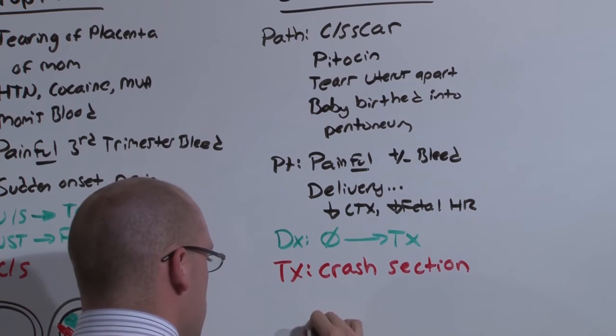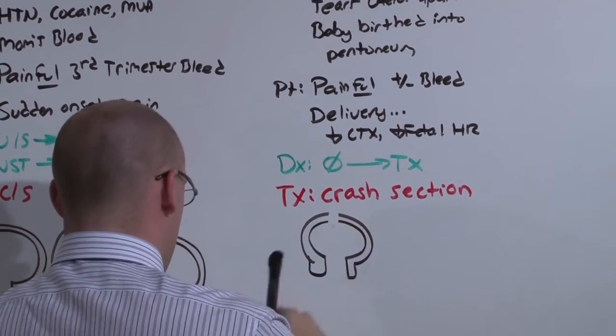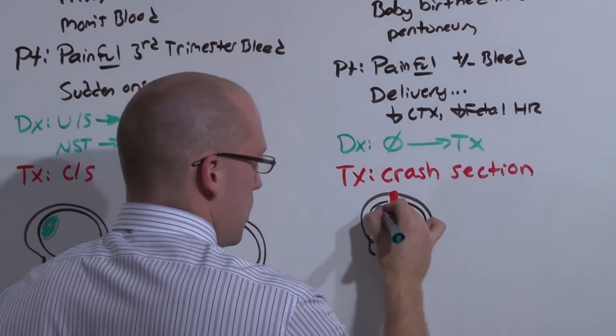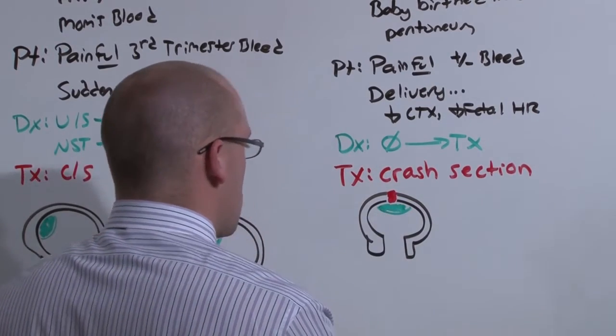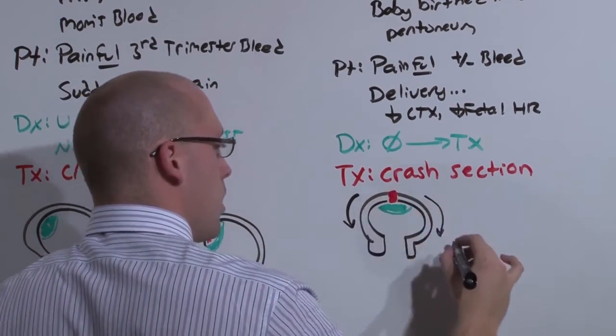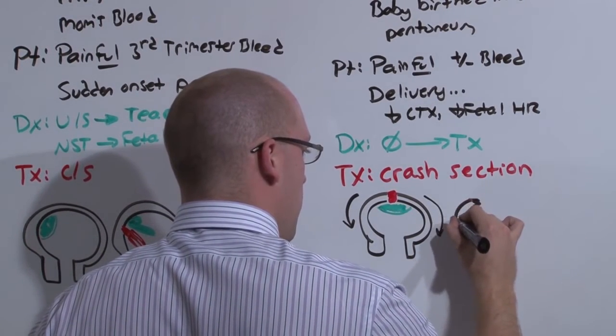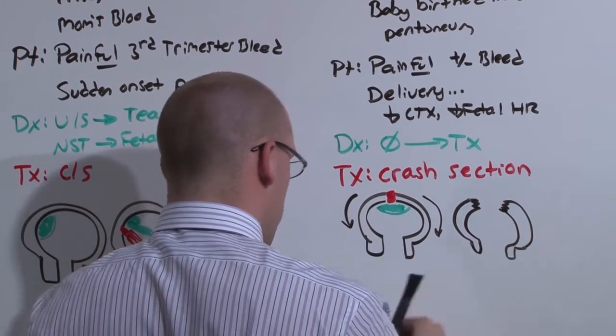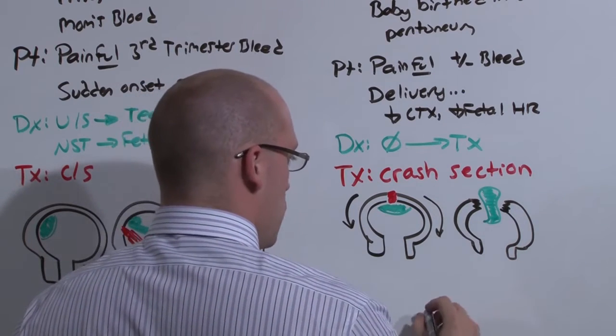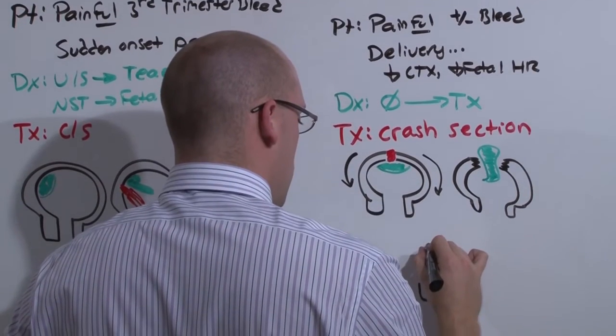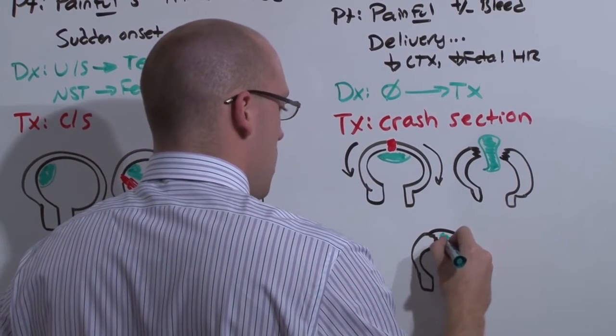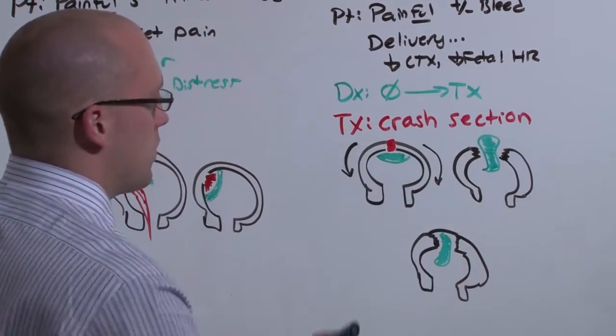So what this looks like is here's a uterus with an old C-section scar. And this is why vaginal delivery after C-section is so dangerous and why OBs fear it so much. The placenta was normally implanted in the normal spot. The contractions of the uterus are meant to propel baby forward. Instead, these contractions tense up on the scar and tear it apart. And baby is birthed through the tear in the uterus into the peritoneum. Alternatively, there is a partial uterine rupture where a single membrane contains baby in the uterus. Both of these require crash section. And they require crash section because baby will be doing very poorly all of a sudden and quickly get worse.